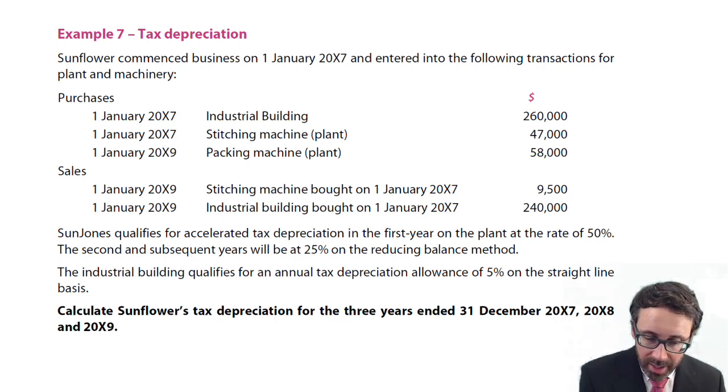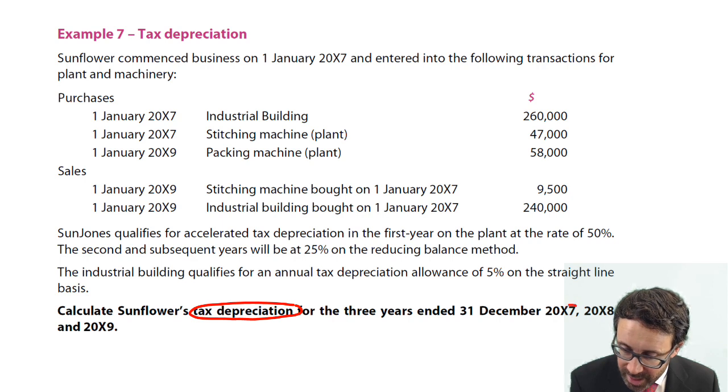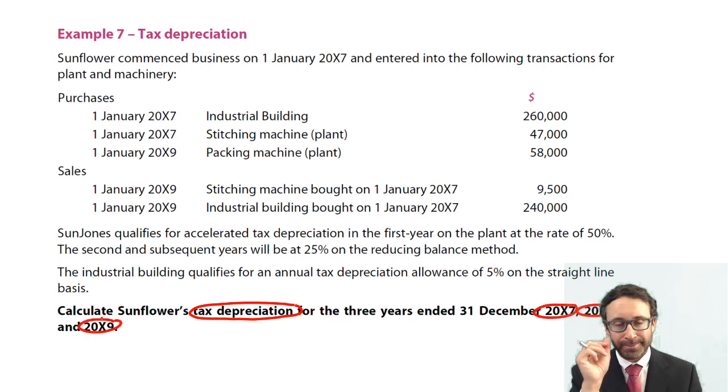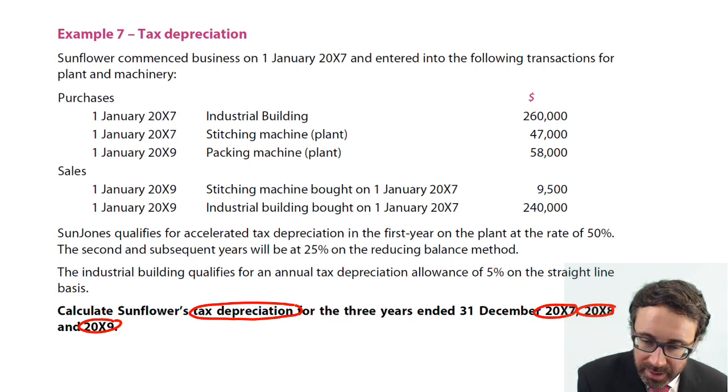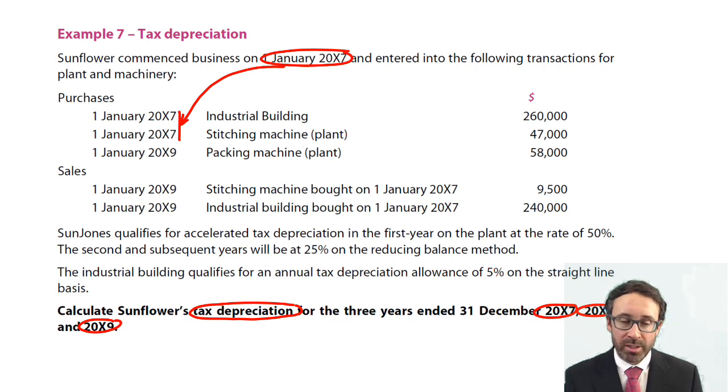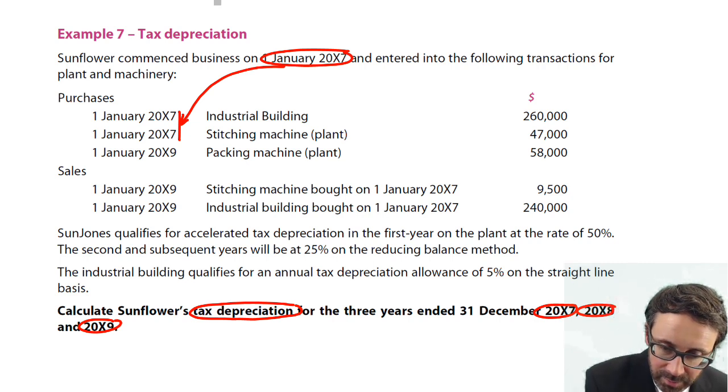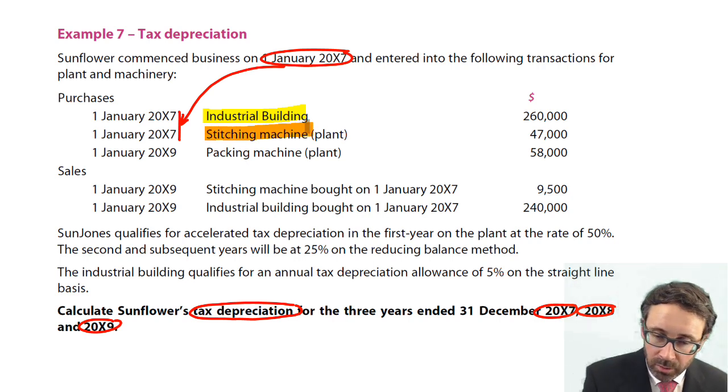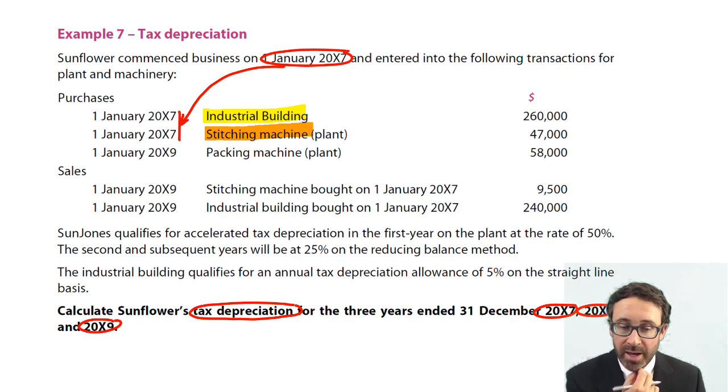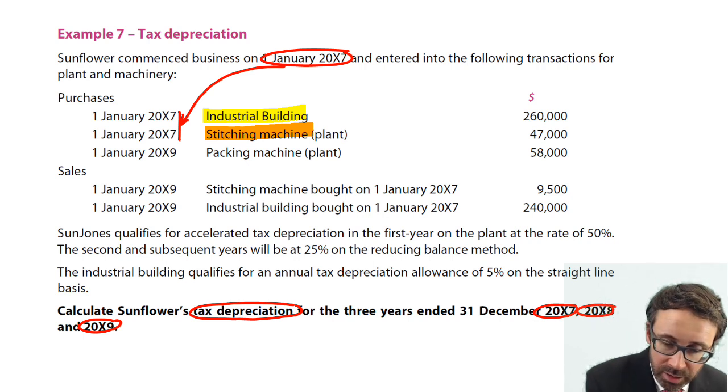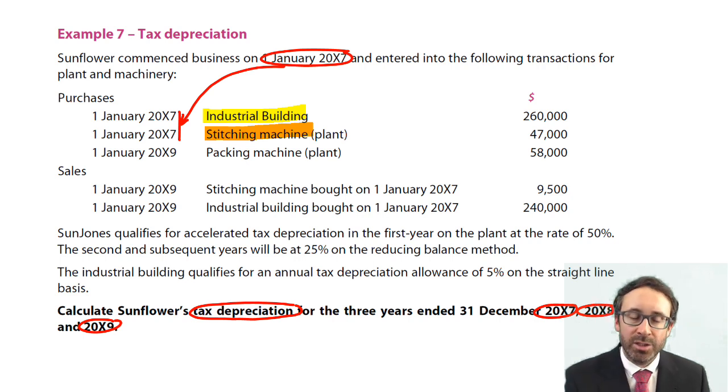What are we asked for? It wants us to work out the tax depreciation, so the tax authorities' version of our accounting depreciation, for the three years ended December X7, X8, and X9. So what do we have? Well, we started business on the 1st of January, and you can see there that on the 1st of January we purchased two machines. We've got the building machine, and then we also have the stitching machine. What we're also told as we move through is that a later date, two years later, we've got a packing machine. And we're told how much that was purchased for. So all of those will be charging tax depreciation.